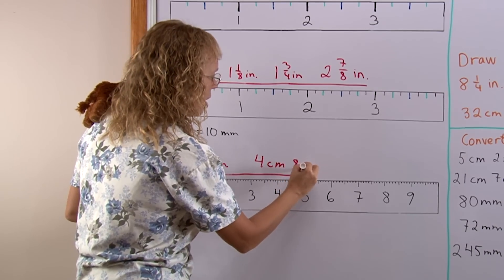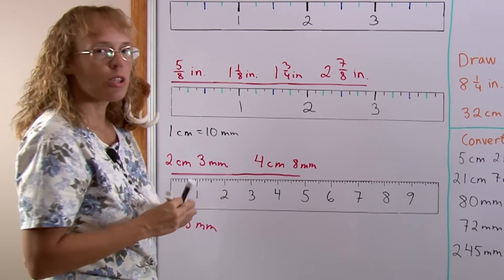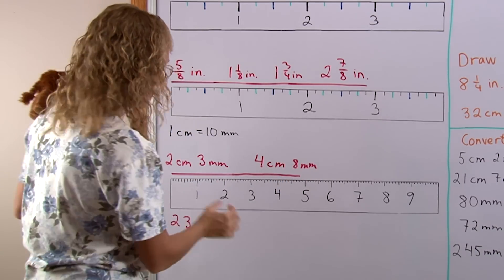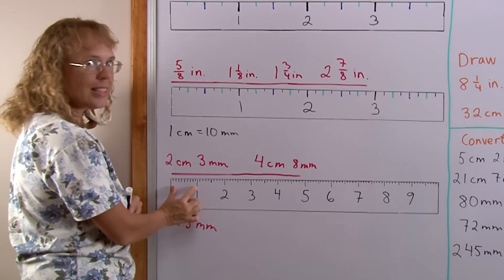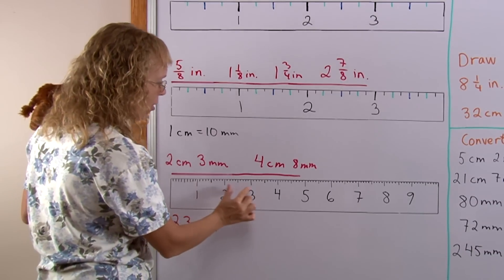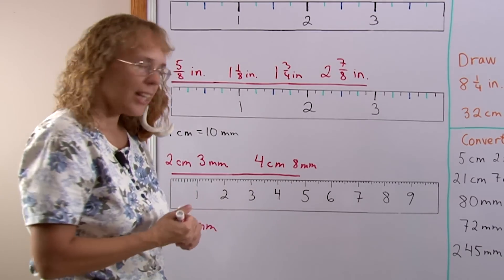4 centimeters, 8 millimeters. Which is also 48 millimeters. Remember each one of these is 10 millimeters. 10, 20, 30, 40 and 8. 48 millimeters.